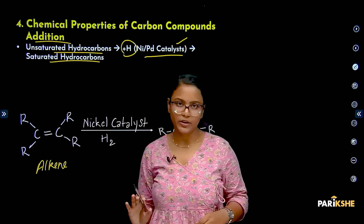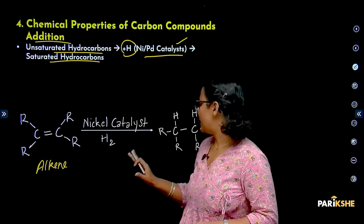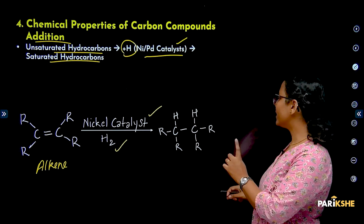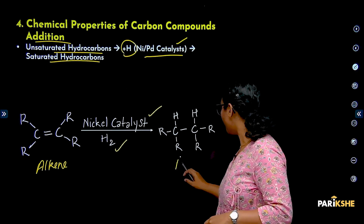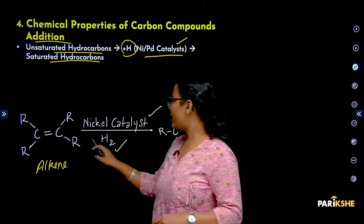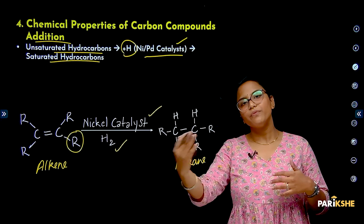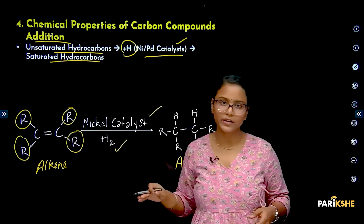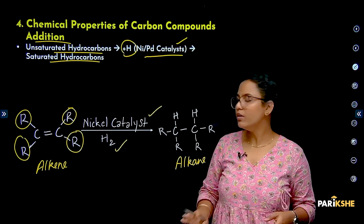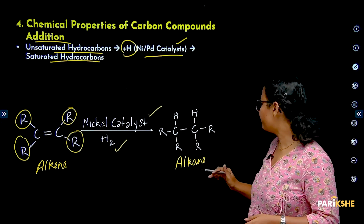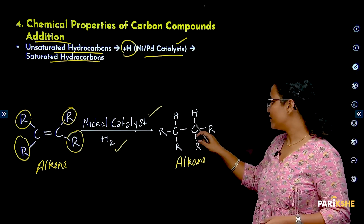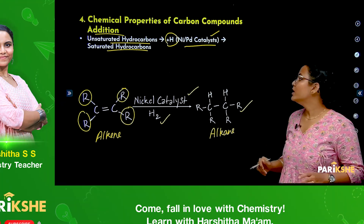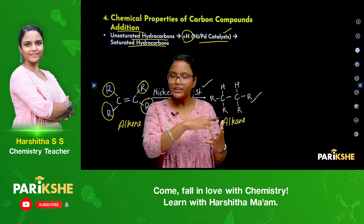An unsaturated carbon compound — also called an alkene — has a double bond. When hydrogen is added to an unsaturated carbon compound in the presence of a nickel catalyst, it is converted to a saturated carbon compound. The double bond breaks and a single bond is formed. Here, 'R' represents different carbon chains bound to the central carbon atoms.